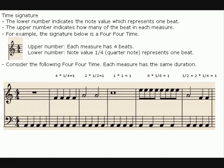For example, the signature below is a 4/4 time. Upper number: each measure has 4 beats. Lower number: the note value is a quarter note, which represents 1 beat.